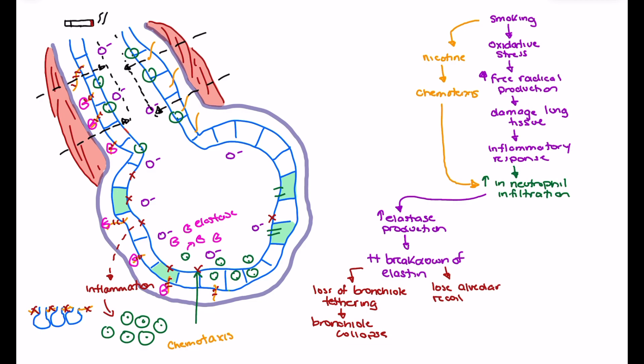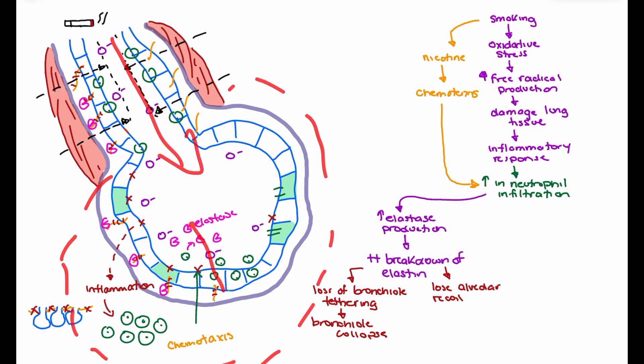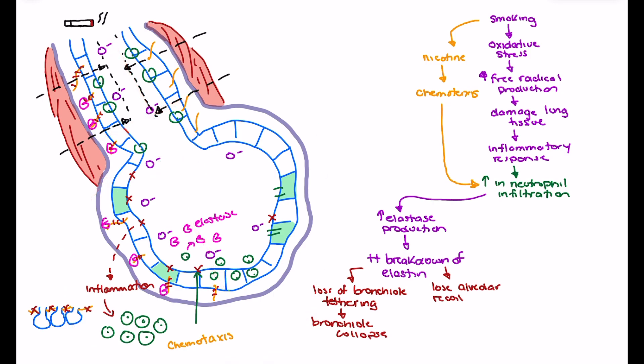We start to see alveoli that will accept a lot of air and become hyperinflated, and we can't get that air out because the bronchioles are collapsing during expiration. So we lose alveolar recoil which leads to alveolar hyperinflation, and together those pieces lead to air trapping, which is most common in emphysema and can be really challenging for the COPD patient.